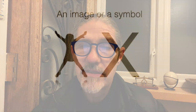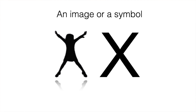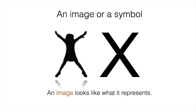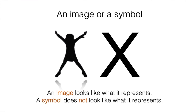We need to learn what a symbol means. An image, we already know what it means — we have mastered the meaning of an image throughout our life. And why? Because an image looks like what it represents. A symbol does not look like what it represents. It has a meaning, but it doesn't look like that meaning.